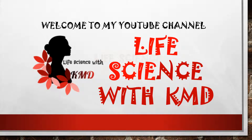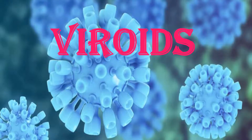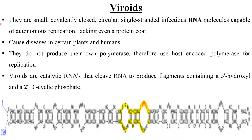Welcome to Life Science with KMD. Today I'm going to explain about viroids. Viroids are small, covalently closed, circular, single-stranded infectious RNA molecules capable of autonomous replication, lacking even a protein coat. They cause disease in certain plants and humans.